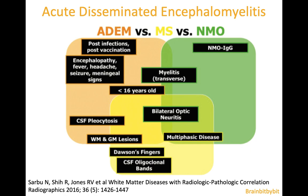After discussing multiple sclerosis, which is the most common demyelinating disease, and NMO with antibodies against aquaporin-4, I will show images of acute disseminated encephalomyelitis in this Brain Bit-by-Bit vlog. All these demyelinating diseases are part of a spectrum with some differences.